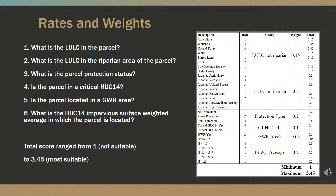The data were turned into raster layers, and a weighted site selection analysis was set up in GIS. The initial suitability analysis focused on six of the eight data sets. The rating and weighting was based on the following six questions: What is the quantity of each type of land use land cover in the parcel? What is the quantity of each type of land use land cover in a 300-foot riparian zone in the parcel? What is the status of conservation protection, if any, in the parcel? Is the parcel located in a critical HUC 14 area? Is the parcel located in a sensitive groundwater recharge area? And what is the percentage of impervious surface for the sub-watershed in which the parcel is located?